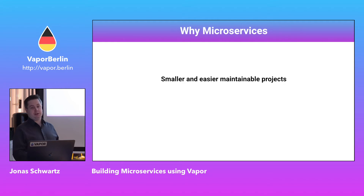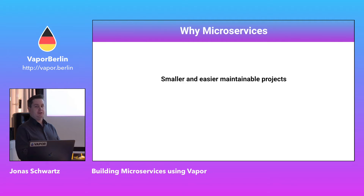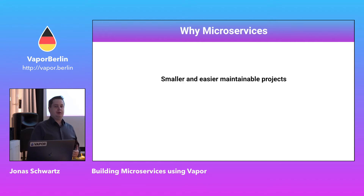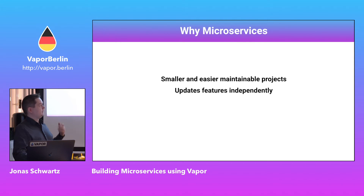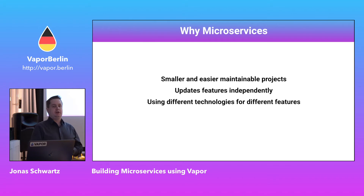We have our Vapor Cloud project right now, which is the size of Vapor itself, and it would take us an insane amount of time to update — it's still running Vapor 2. You can split your project up into multiple smaller pieces, which makes it easier to update and maintain each feature independently.